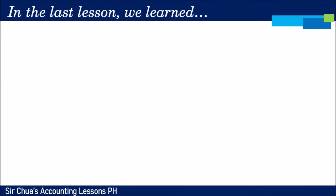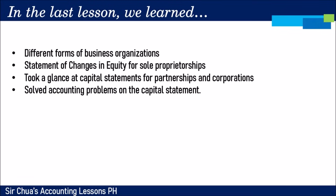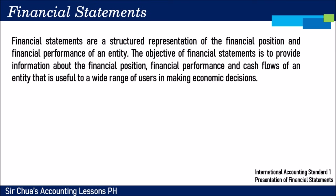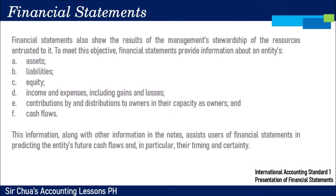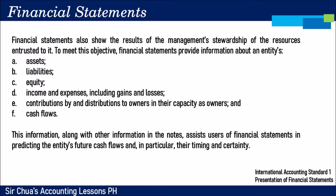I think we're ready to start. In the last lesson, we learned about the different forms of business organizations like sole proprietorship, partnership, and corporation, and how to prepare the statement of changes in equity. We also looked at capital statements of partnerships and corporations and solved related accounting problems. Today, we're ready to talk about the statement of cash flows. Financial statements are a structured representation of the financial position and financial performance of an entity, and their objective is to provide users with information about financial position, performance, and cash flows.